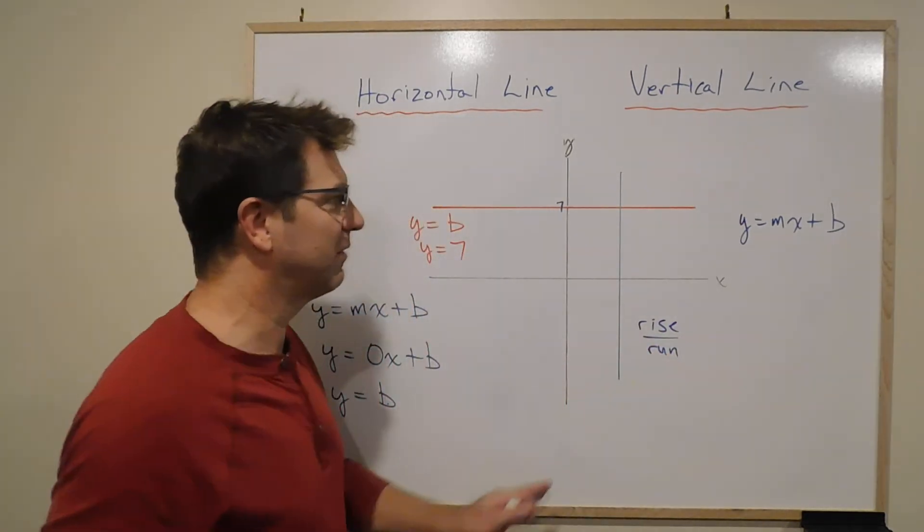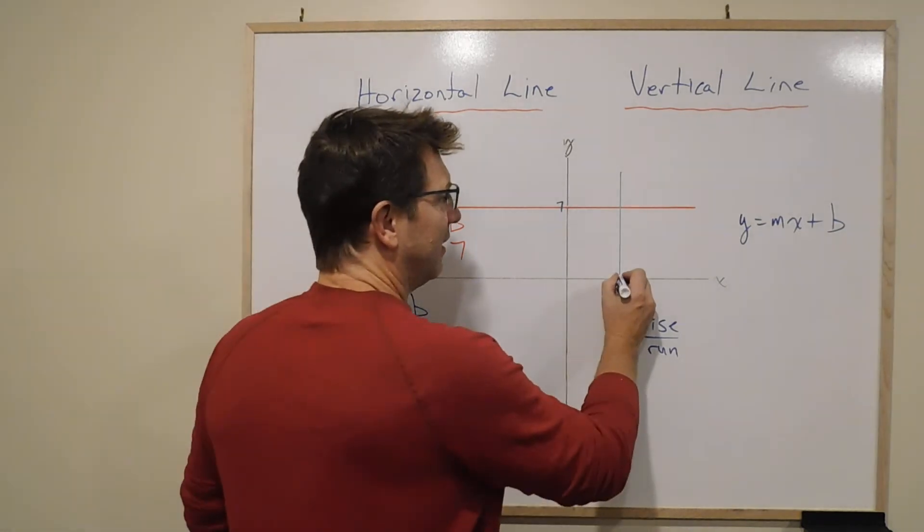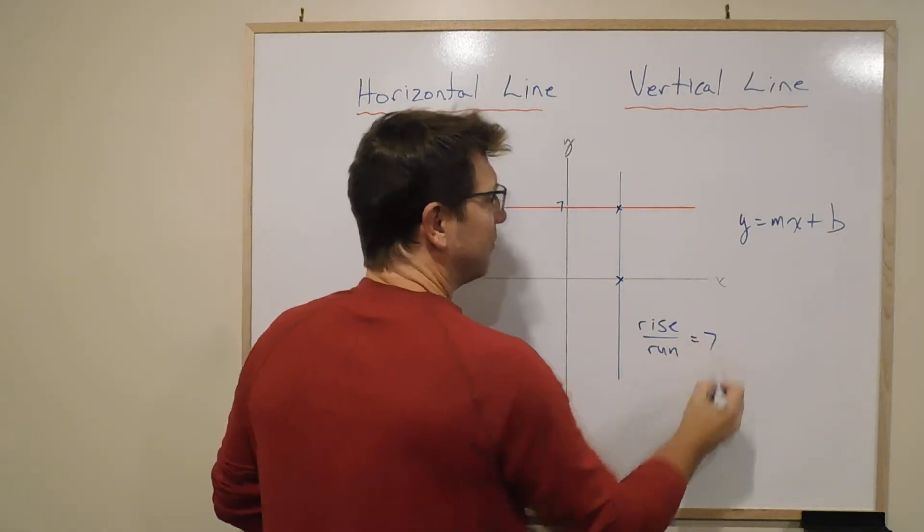In this case, the rise between any two points—let's say between here and here, it goes from 0 to 7—so the rise would be 7.